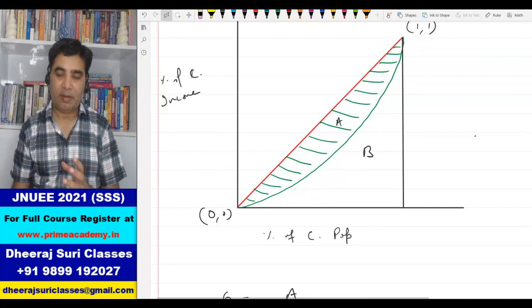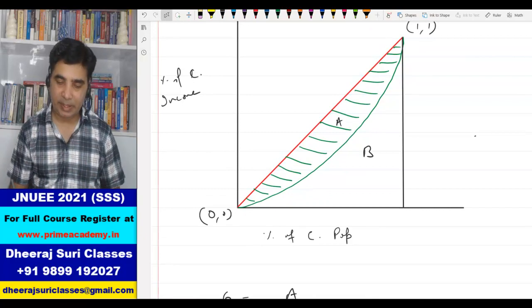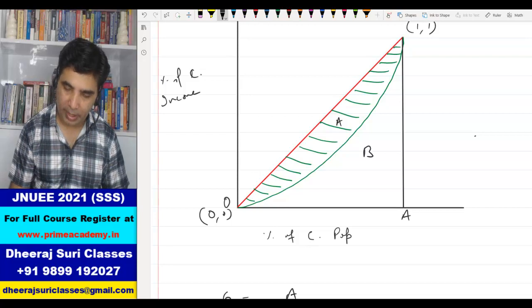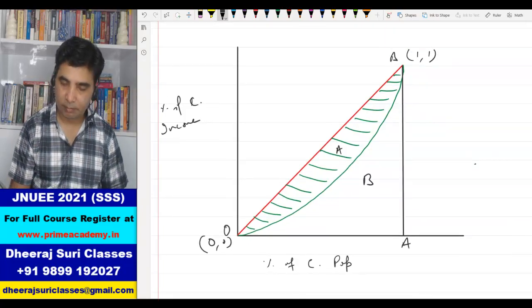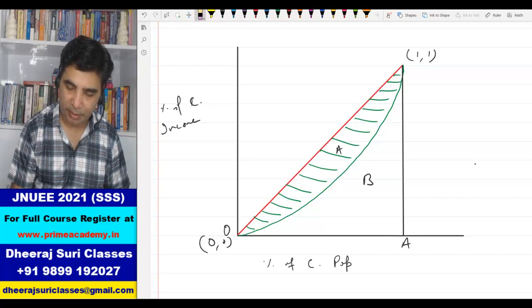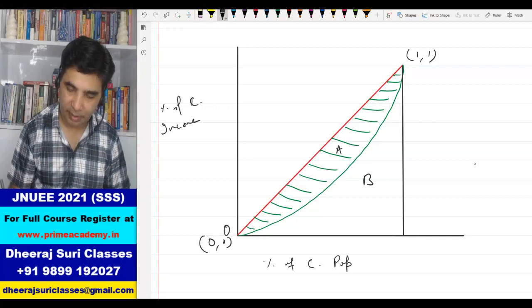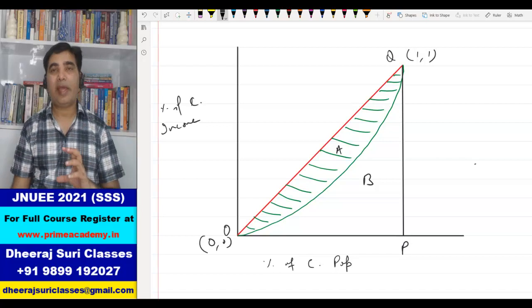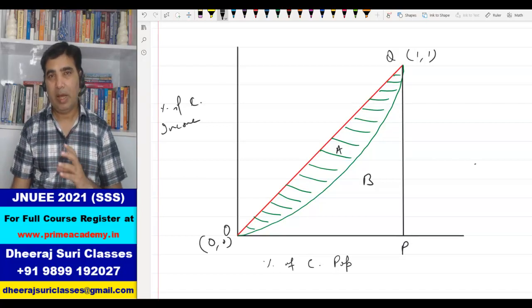Now how do we find A plus B? Basically A plus B is the area of this triangle. Let me call it A, let me call this O, A and let me call this B. Rather A and B have already been used, so I should name them differently. O, P, Q. So area of triangle O, P, Q is A plus B.